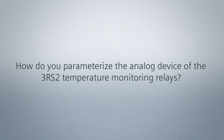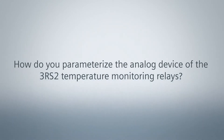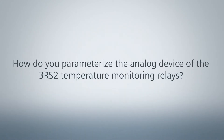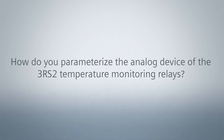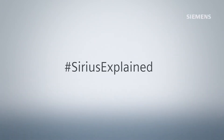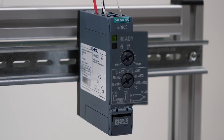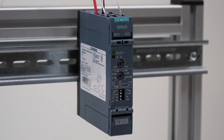How do you parameterize the analog device of the 3RS2 temperature monitoring relays? There are two rotary switches on the top of the device. They are used to adjust the temperature limit and the measuring range.